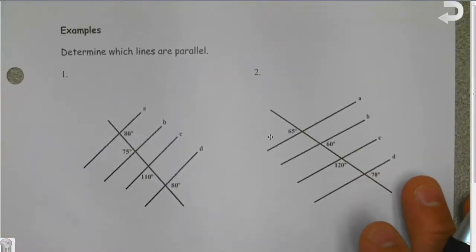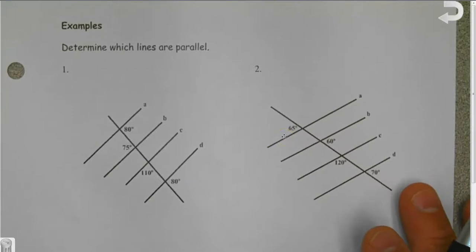So the question becomes how do I look at a set of four lines and determine which two lines are parallel? It's actually really simple. All you have to do is fill out the angles for the whole picture.